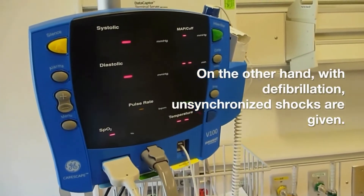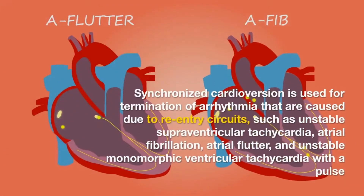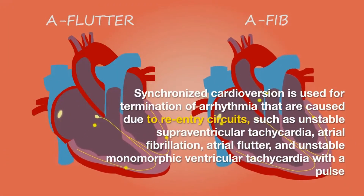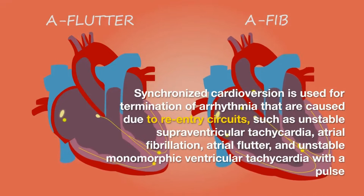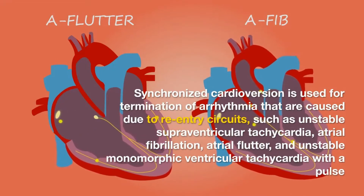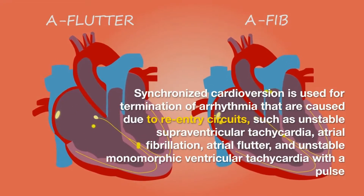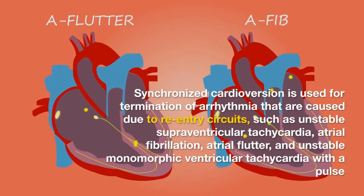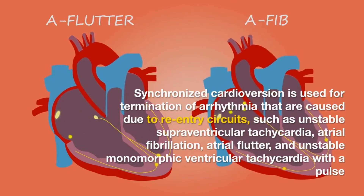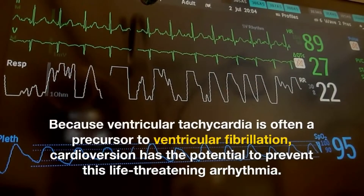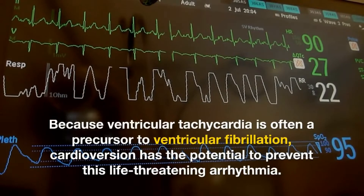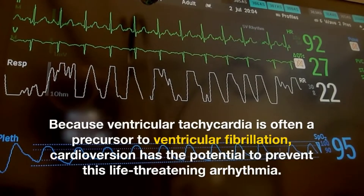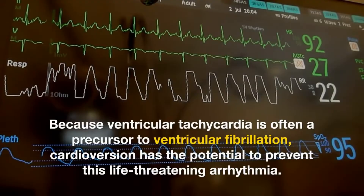Synchronized cardioversion is used for termination of arrhythmias that are caused due to re-entry circuits, such as unstable supraventricular tachycardia, atrial fibrillation, atrial flutter, and unstable monomorphic ventricular tachycardia with a pulse. Because ventricular tachycardia is often a precursor to ventricular fibrillation, cardioversion has the potential to prevent this life-threatening arrhythmia.